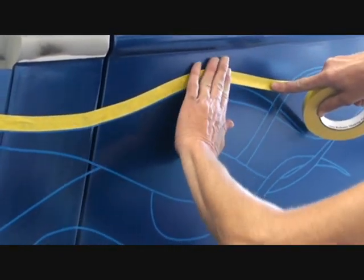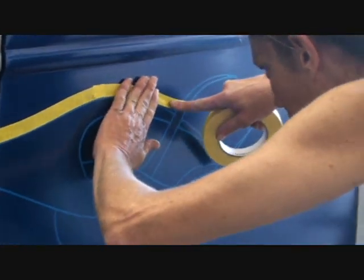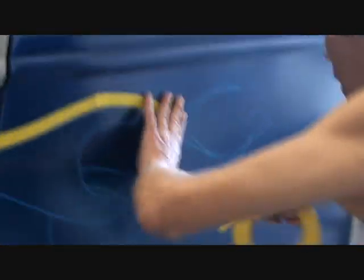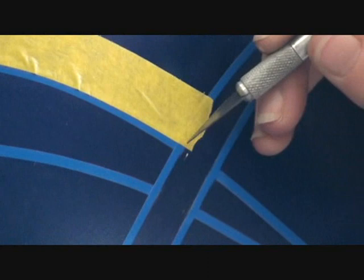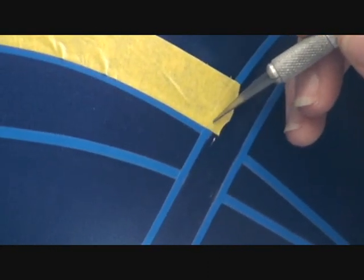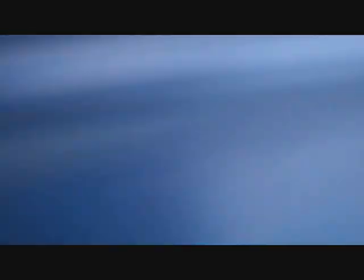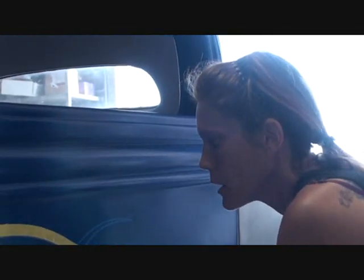So what Minnie's doing is she's outlining all the outer edges of the flame. Now when she gets to a corner section, like you watch her do right here, she's going to overlap the tape, then she's going to take her knife or a razor blade, and she's going to lightly cut the tape.